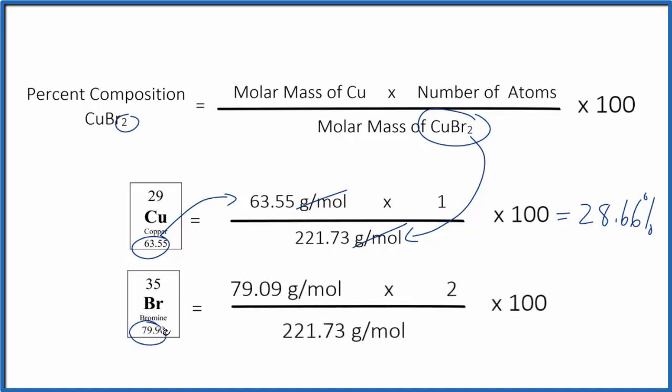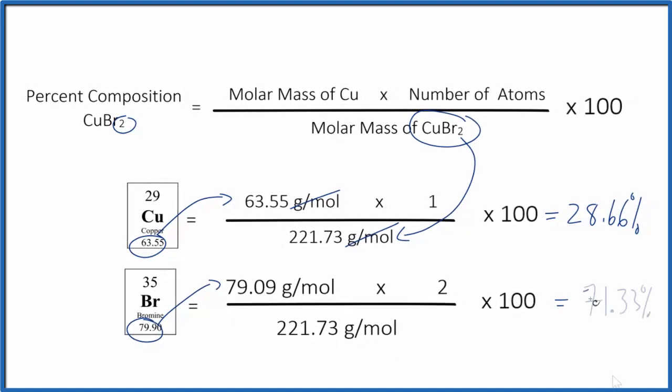So we've got the atomic mass for bromine right here. We have the two bromine atoms. We have the molar mass for copper 2 bromide. Multiply by 100, you get 71.33 percent.